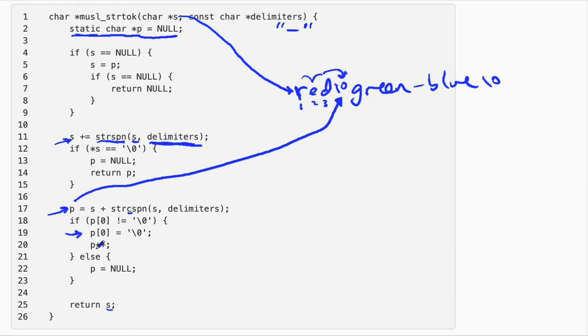And then it increments P. So now P is just a pointer. It just gets incremented to point to the G. So it points to the G now, P is all set. And we do not do this part. And then we return S.